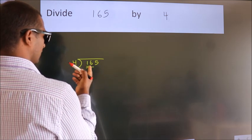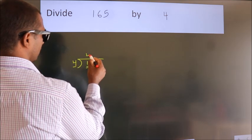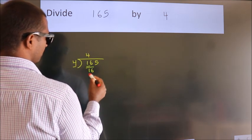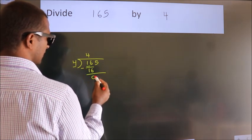numbers: 16. When do we get 16 in the 4 table? 4 times 4 is 16. Now we should subtract, we get 0.